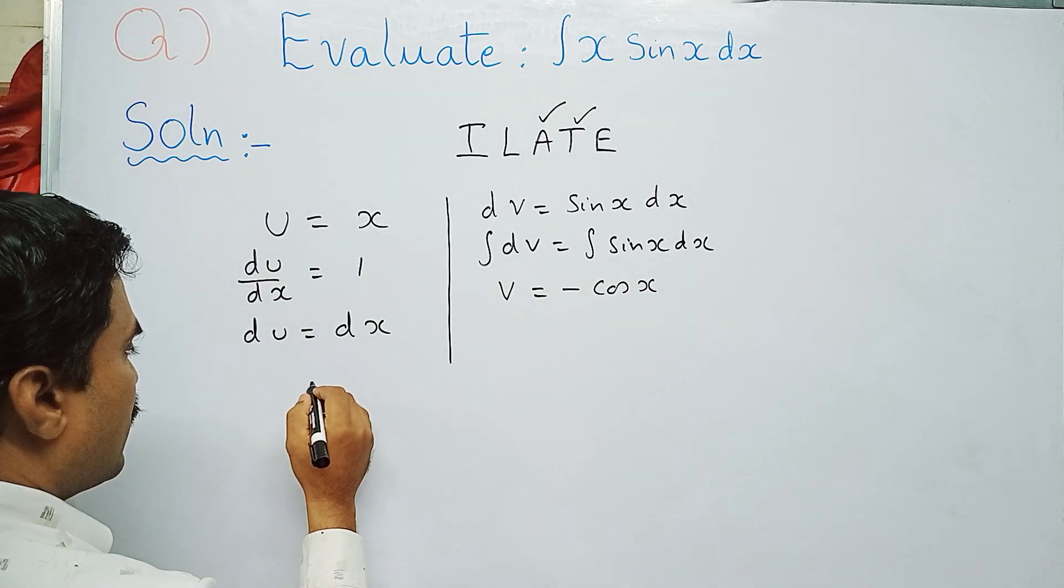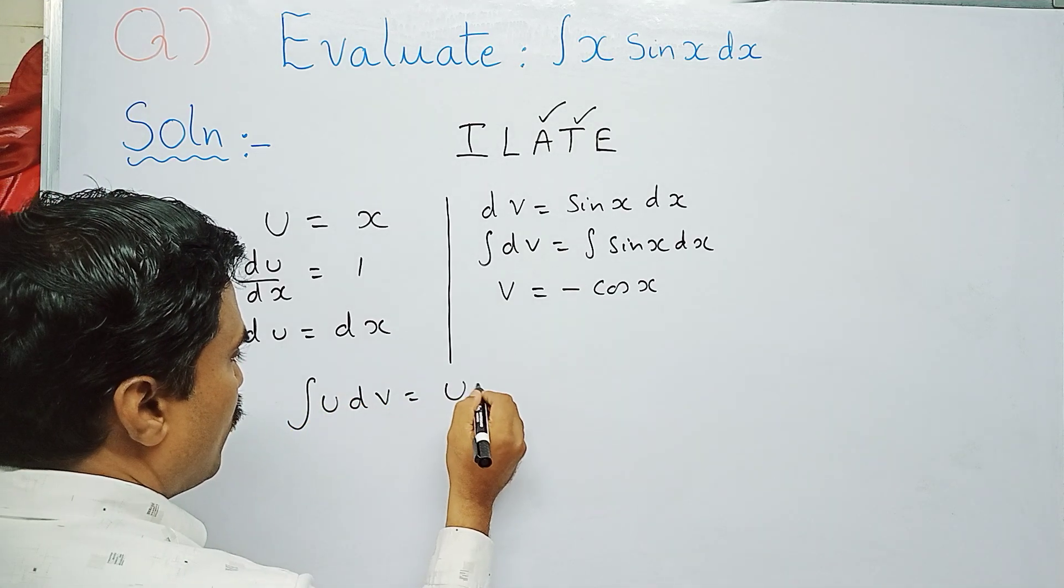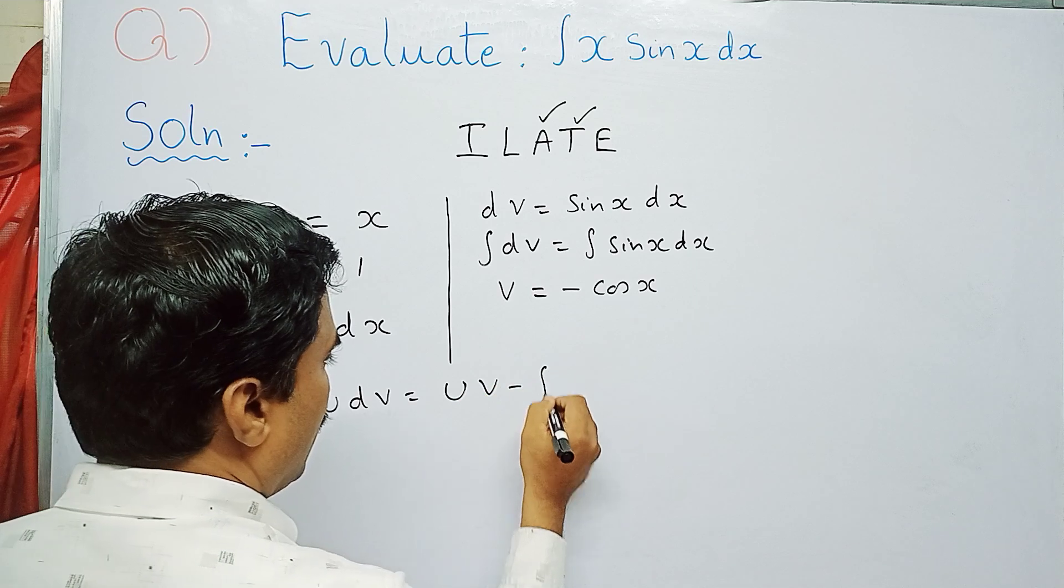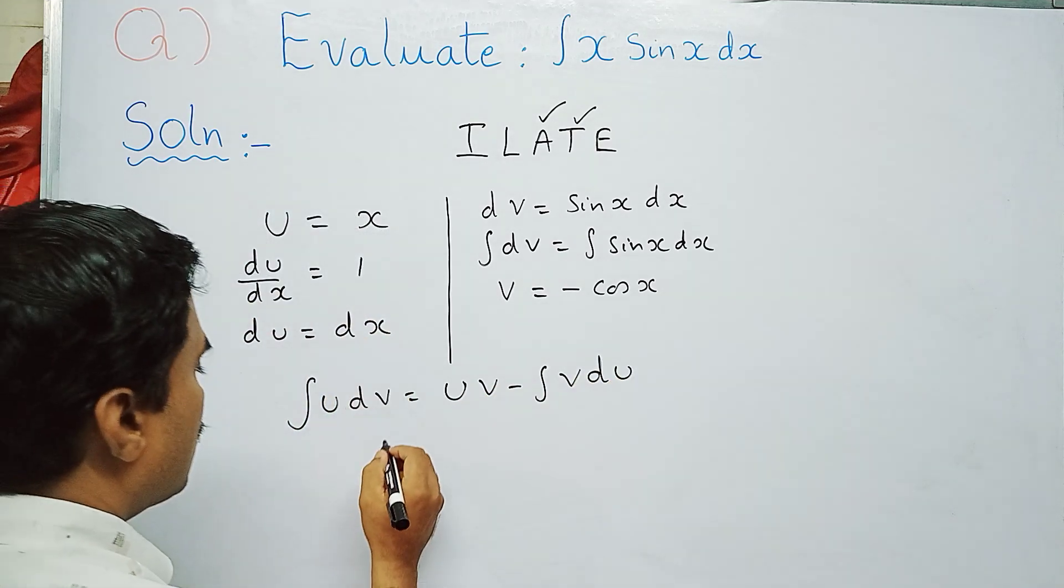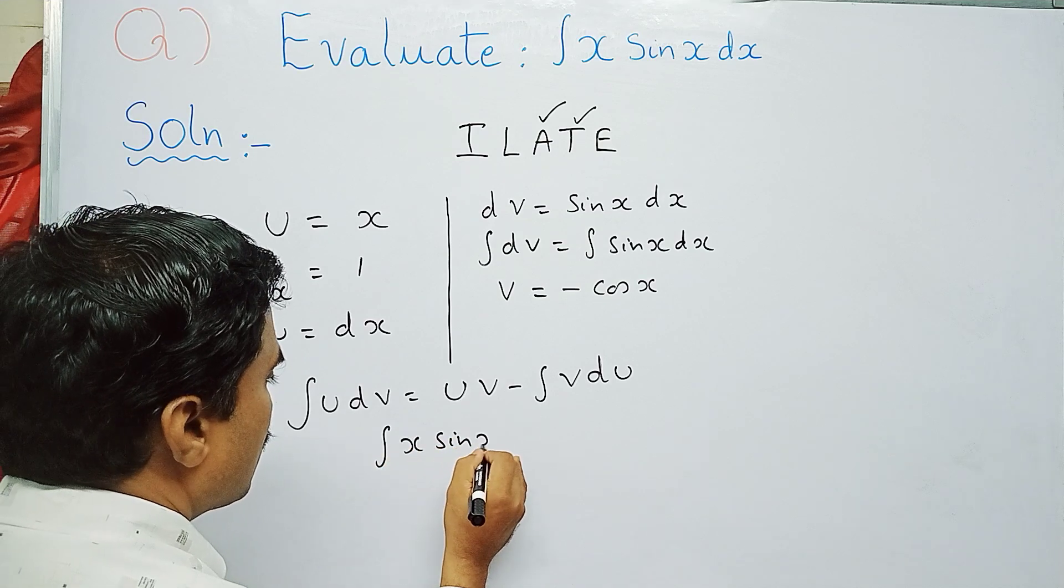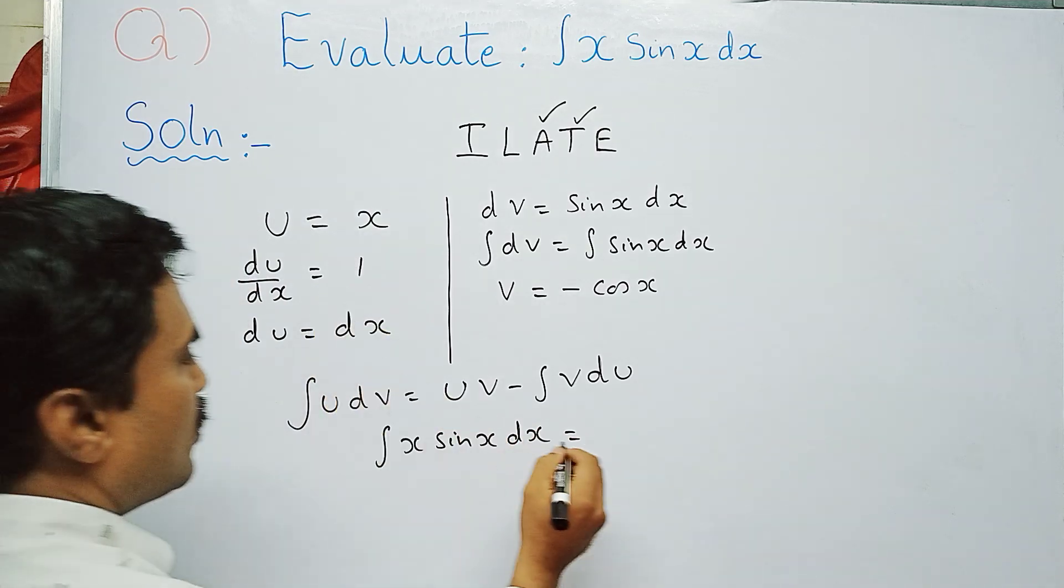Now we write the integration by parts formula: integral u dv equals u v minus integral v du. The required integral becomes: integral x sin x dx equals u times v minus integral v du.